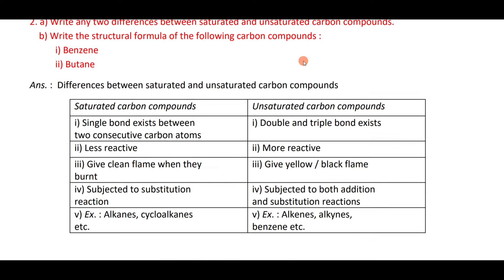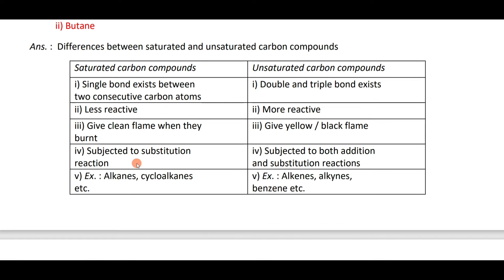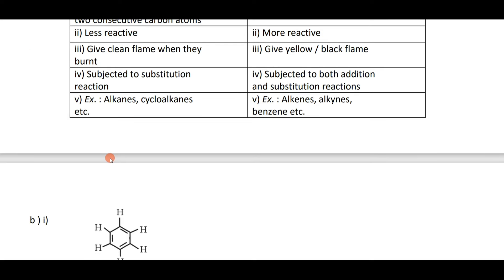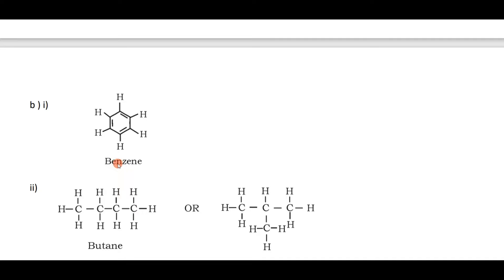Difference between saturated and unsaturated carbon compounds: saturated has single bonds and is less reactive; unsaturated has double or triple bonds and is more reactive. Saturated compounds give a clean blue flame; unsaturated gives a sooty black flame. Saturated compounds undergo substitution reactions; unsaturated undergo addition as well as substitution reactions.